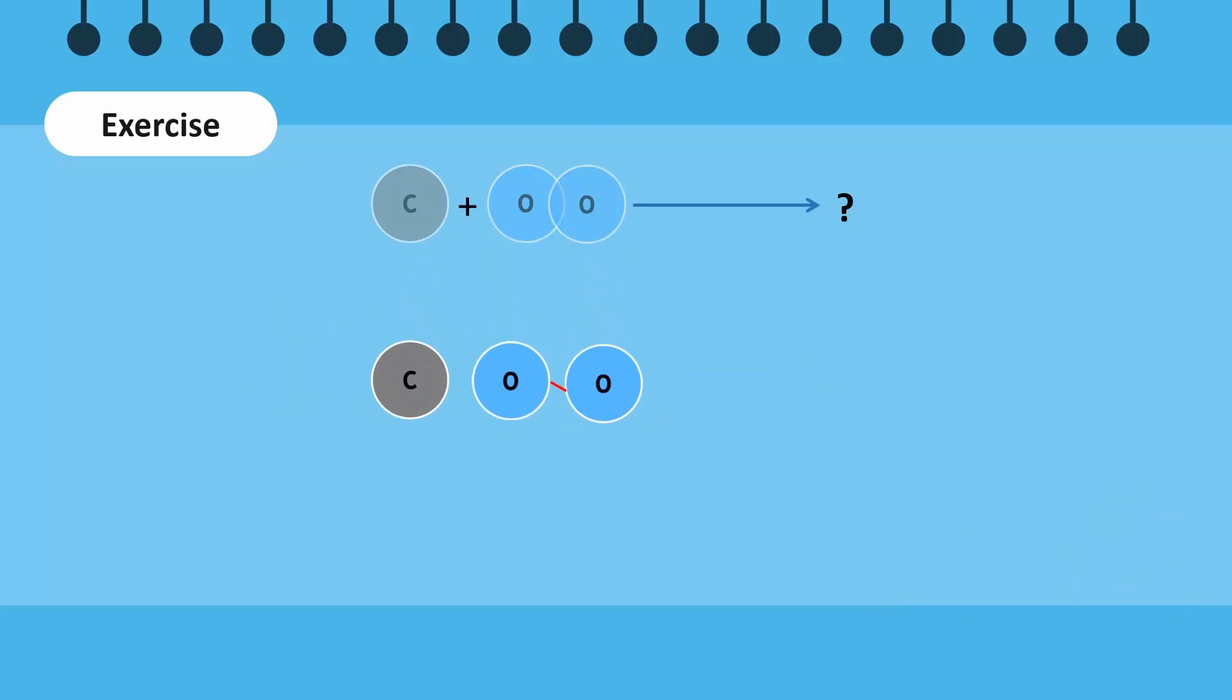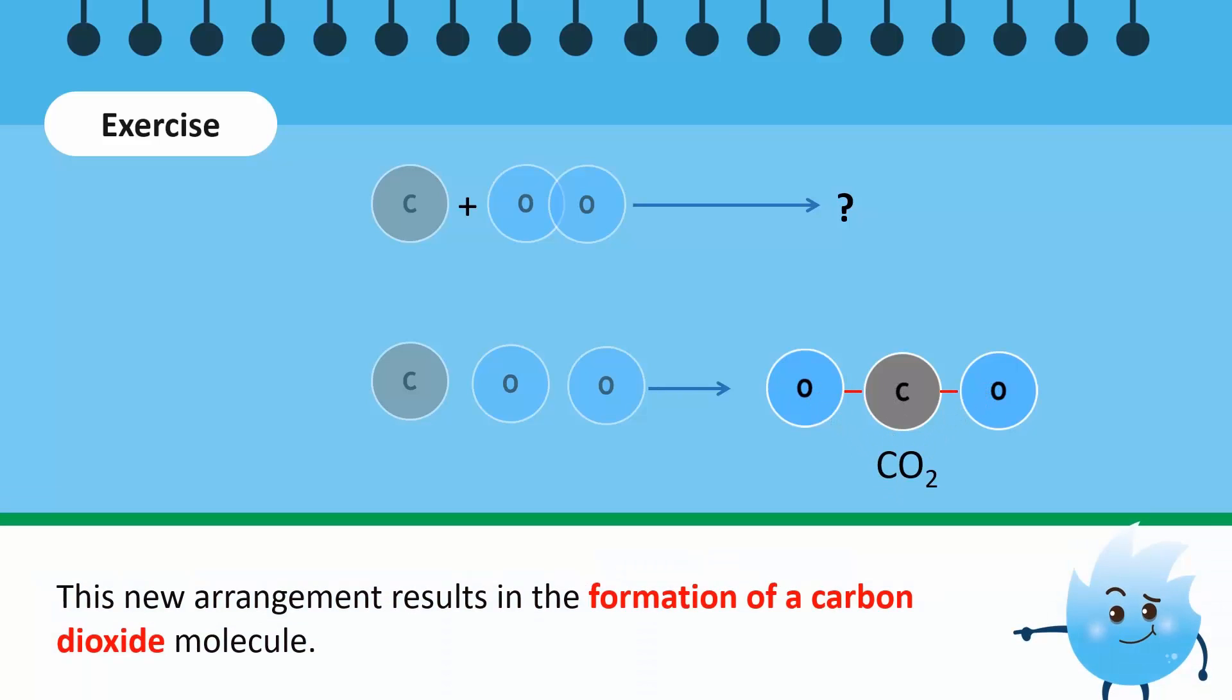Here, two oxygen atoms break their bonds and form new bonds with a carbon atom. This new arrangement results in the formation of a carbon dioxide molecule.